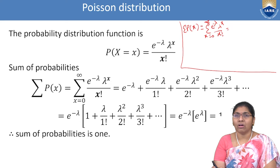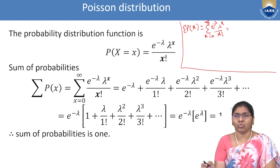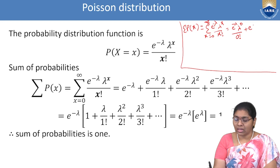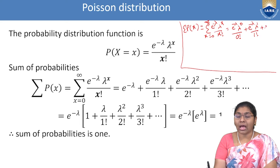Expanding the summation: substituting x = 0 gives e^(−λ) · λ^0 / 0!; x = 1 gives e^(−λ) · λ^1 / 1!; x = 2 gives e^(−λ) · λ^2 / 2!; and so on.